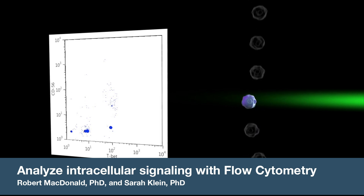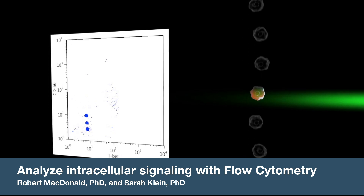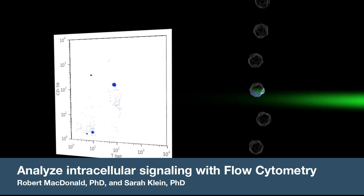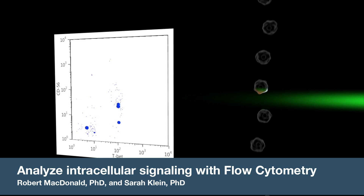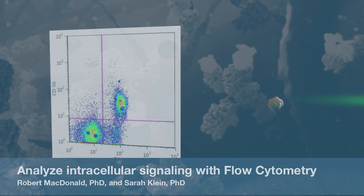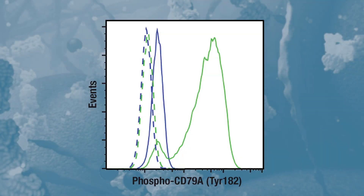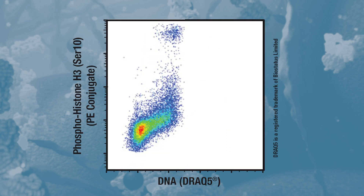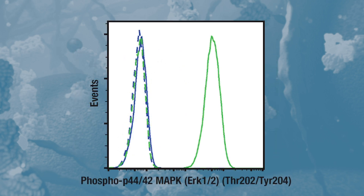Flow cytometry is ideal for assessing signaling events in biological systems. It provides quantitative, multi-parametric readouts at the single cell level, with high sensitivity and speed. You can use flow cytometry to test hypotheses that certain stimuli, such as treatments with inhibitors, agonists, or antagonists, can modulate specific signaling activities.